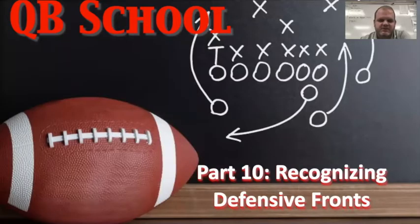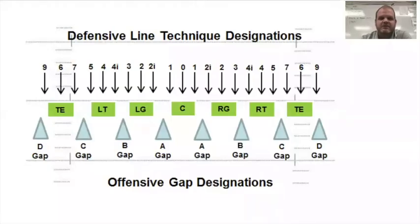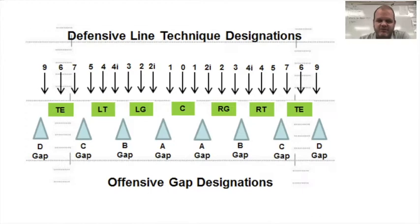In the 10th installment of QB School we're talking about recognizing defensive fronts. Quarterbacks, the first thing you need to know is that offensive linemen describe where a defensive lineman is based on what's called a technique. It does not mean his skill — it means where he is lined up. Some teams do it a little differently and the numbering looks a little confusing, but just work your way inside out.